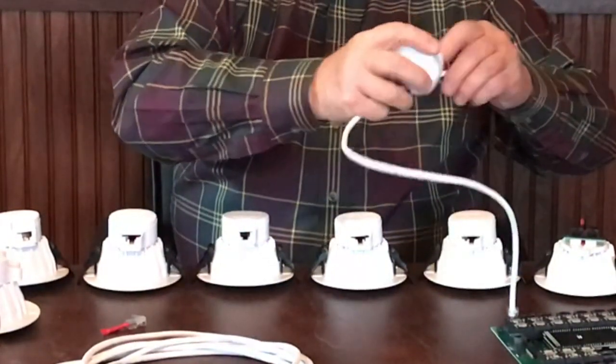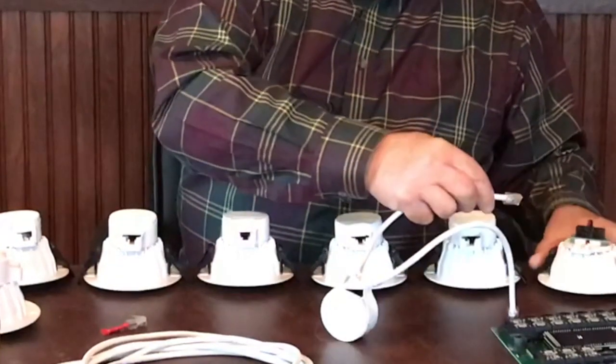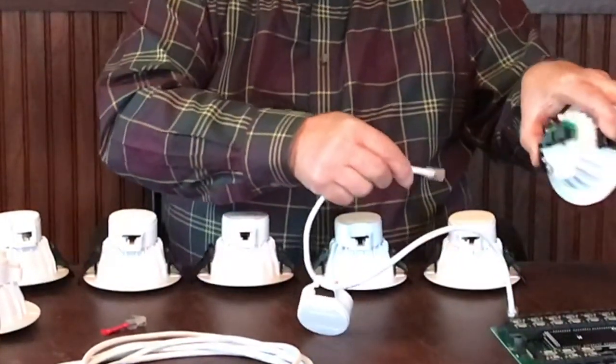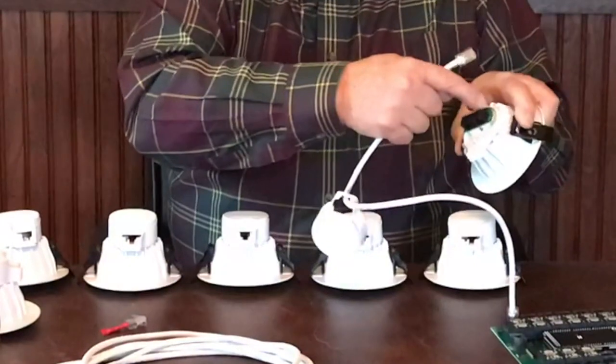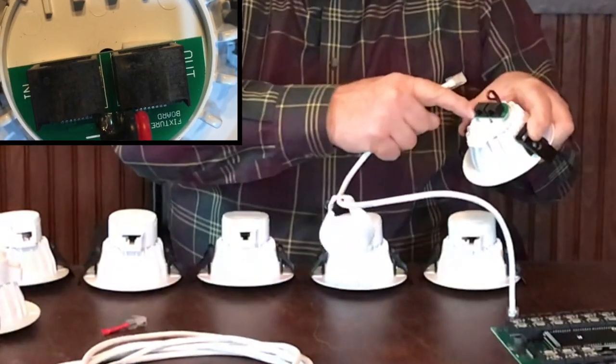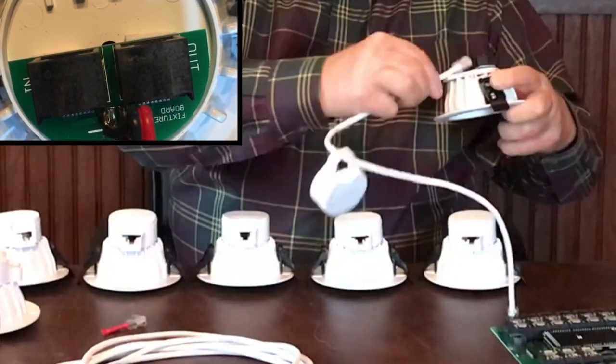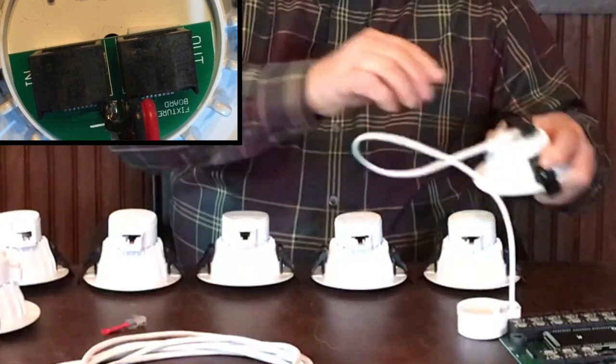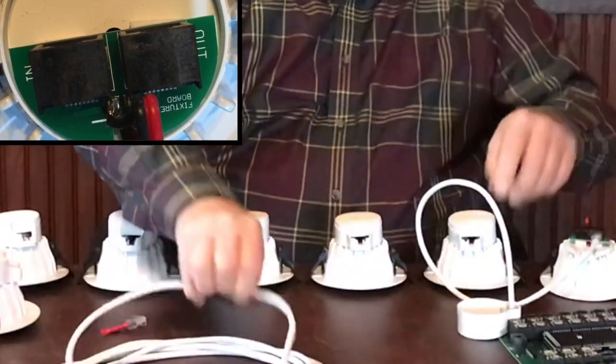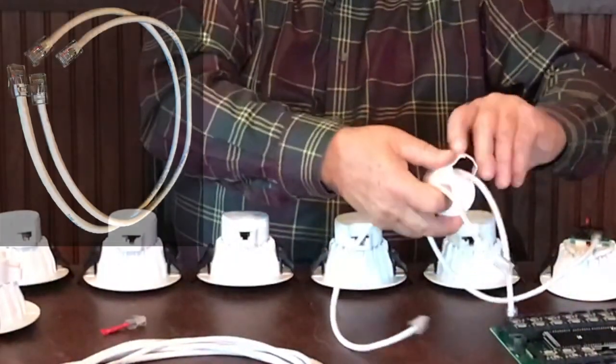Then you run your cable that you've run from the controller to the light fixture. Now one side is marked 'in' and one side is marked 'out', so you put your light wire that is run in the inside.